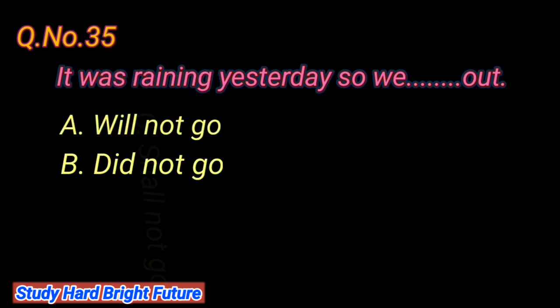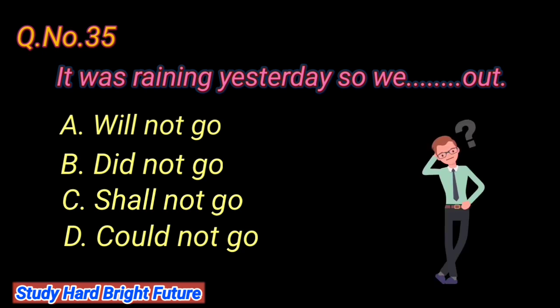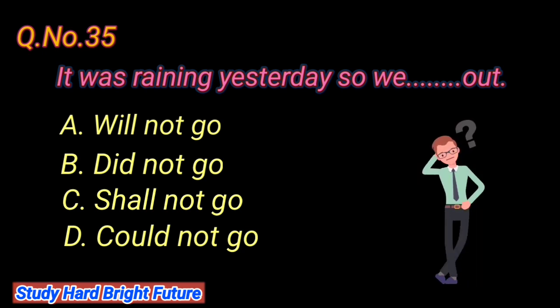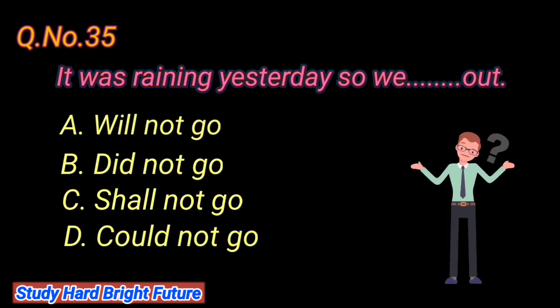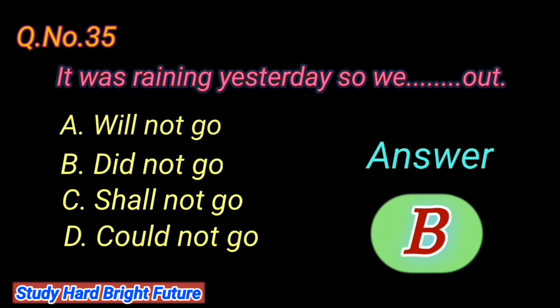Question number 35: It was raining yesterday, so he _____ out. A. Will not go, B. Did not go, C. Shall not go, D. Could not go. The right answer is B. Did not go.